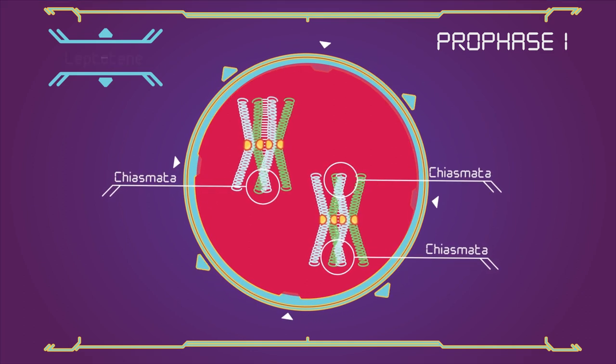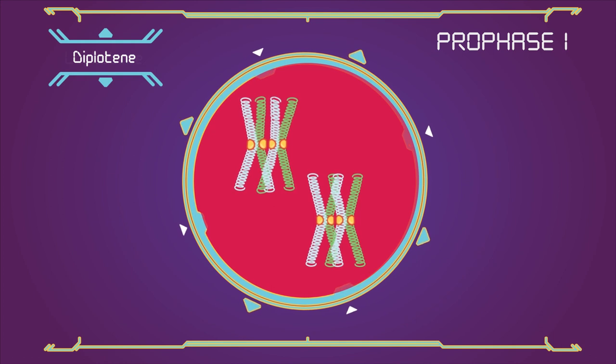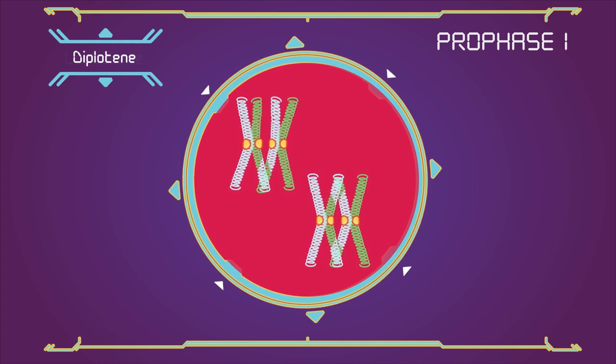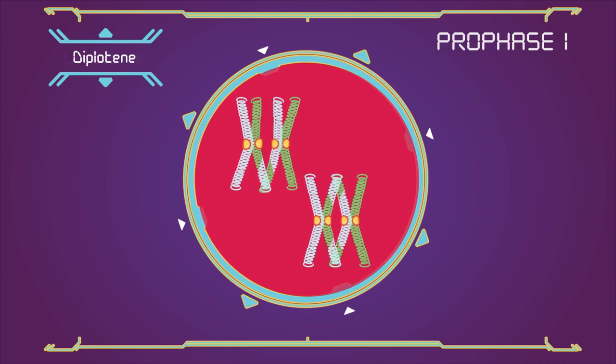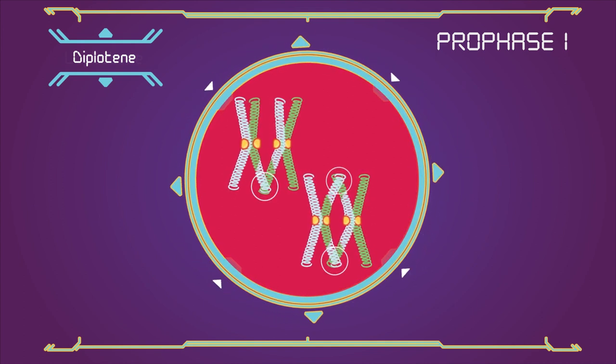Diplotene: The synaptonimal complex degrades and homologous chromosomes separate from one another a little. However, the homologous chromosomes of each bivalent remain tightly bound at chiasmata.